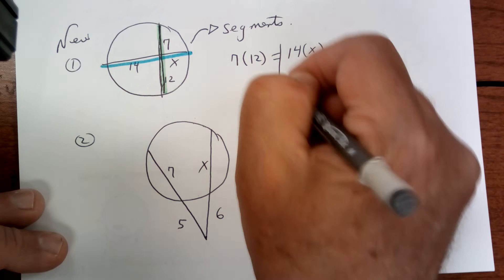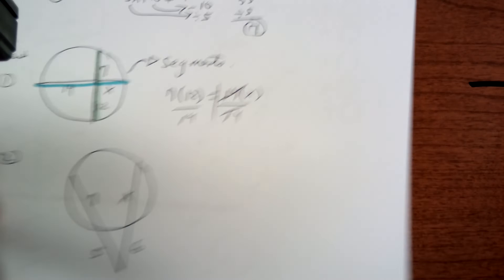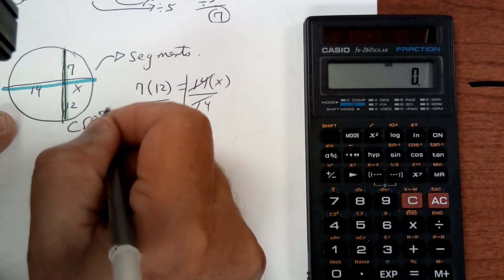And then to solve this, you just divide by 14. So get your calculator. These are easy. This is called the cross. I call this one the cross problem.